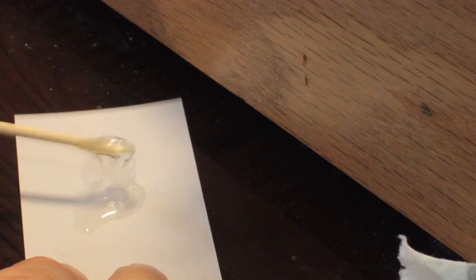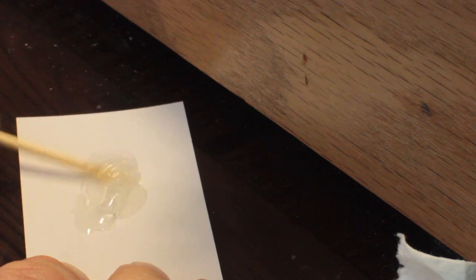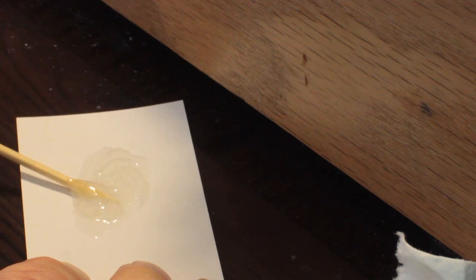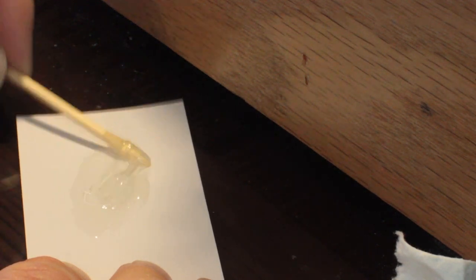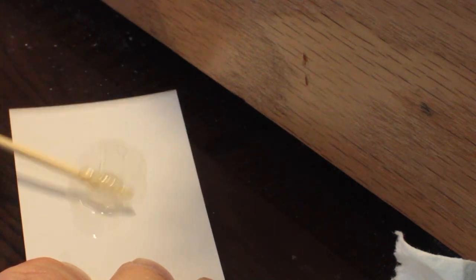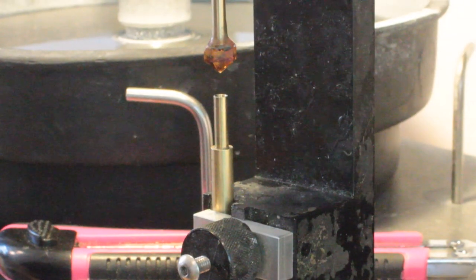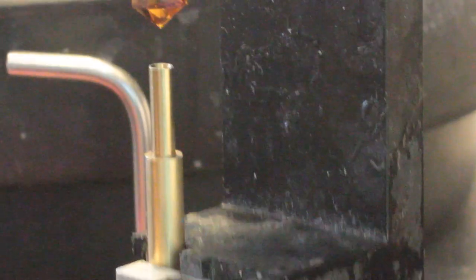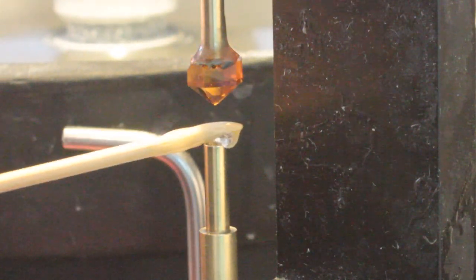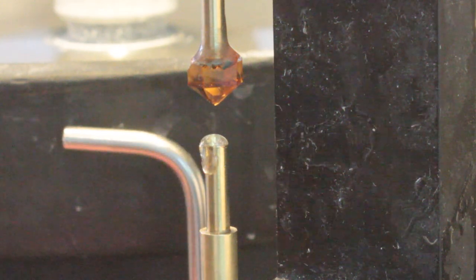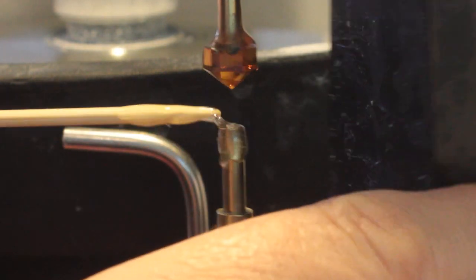Then you mix the two-part epoxy, the hardener and the resin together, and when you do that, you have about two minutes to put it onto the stone where you want it before it starts setting up. Don't worry about bubbles or anything. None of that's a problem. There's no issues. So once you've got it mixed up, you want to put it on your stone and the dop.